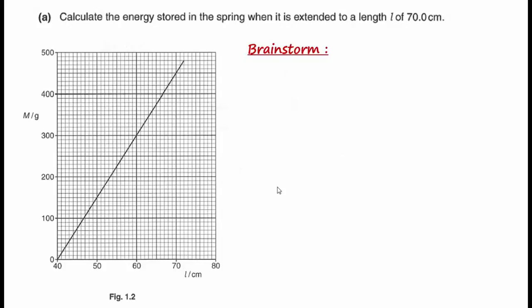We can now focus on Part A. In Part A, we are asked to find the energy stored in the spring when the spring has a length of 70 cm. This energy is the elastic potential energy of the spring. In general, there are two ways to find elastic potential energy.